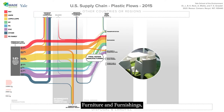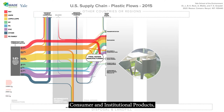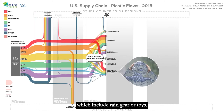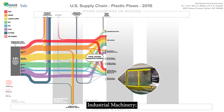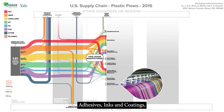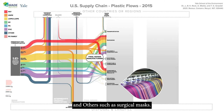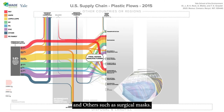Furniture and furnishings. Consumer and institutional products, which include rain gear or toys. Industrial machinery. Adhesives, inks, and coatings. And others, such as surgical masks.